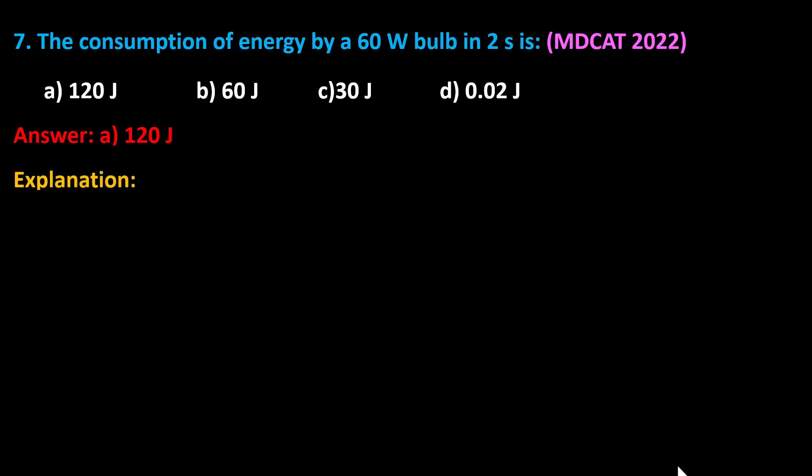Explanation: The energy consumed is equal to the product of power and time — E equals P times T. By putting in the values, we get the energy 120 Joules.